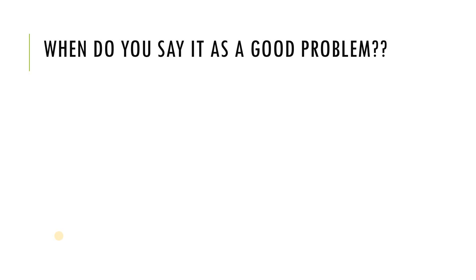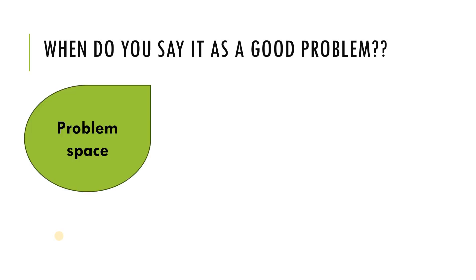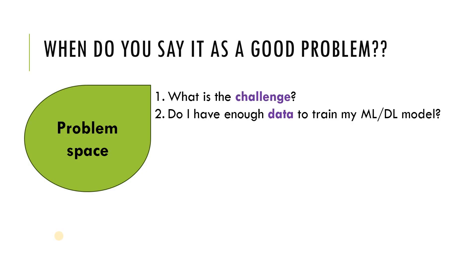So when do you say that it is a good problem? Where do I start? How do I say that this is a good problem or not a good problem? Let me bring two dimensions here. One is problem space. When I say problem space, what are the things that you need to look into? Number one, what is the challenge that we have to address? In case if you are doing a machine learning or a deep learning project, do I have enough data to train my model? These are the two primary questions. The problem space is nothing but the challenges and why you need to solve that problem.